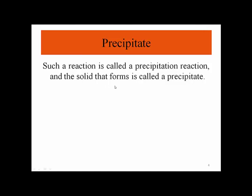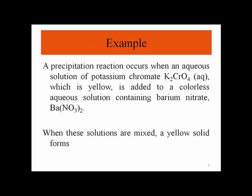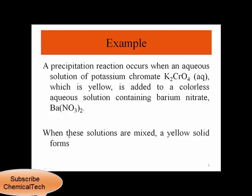So it means that we have two solutions and when we mix them together, one of the products will be in the solid phase — we call it the precipitate. Let's have a quick example. A precipitation reaction occurs when an aqueous solution of potassium chromate, which is yellow, is added to a colorless aqueous solution containing barium nitrate. When these solutions are mixed, a yellow solid forms — that's the precipitate — and the reaction is a precipitation reaction.